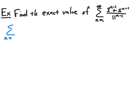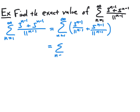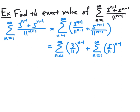We start with the series n equal 1 to infinity of 3 to the n minus 1 plus 5 to the n minus 1 over 11 to the n minus 1, and break it up across the sum in the numerator. This gives us the sum from n equal 1 to infinity of 3 to the n minus 1 over 11 to the n minus 1, plus 5 to the n minus 1 over 11 to the n minus 1. We can then split this into two series: n equal 1 to infinity of 3 elevenths to the n minus 1, plus n equal 1 to infinity of 5 elevenths to the n minus 1.